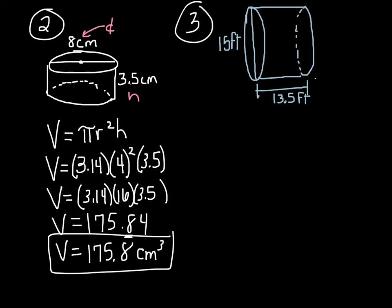Example number three. We have a cylinder on its side. We know the diameter is 15 feet and the height is 13.5 feet. Please make note that this is the height because this is on its side. So this is the height. That's the diameter. So we write down our formula. V equals pi r squared times height.